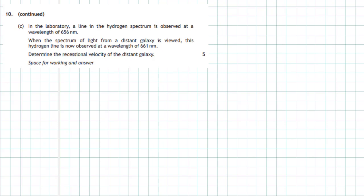In the laboratory, a line in the hydrogen spectrum is observed at a wavelength of 656 nanometers. When the spectrum of light from a distant galaxy is viewed, this hydrogen line is now observed at a wavelength of 661 nanometers. We need to determine the recessional velocity of the distant galaxy — this is worth five marks, so we need to be careful about which equations to use.